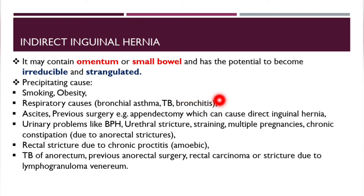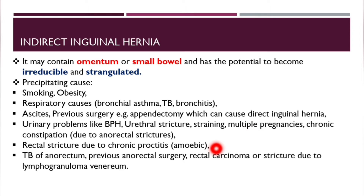The precipitating causes include smoking, obesity, and respiratory causes like bronchial asthma, TB, bronchitis, ascites, and previous surgery — for example, appendectomy, which can cause direct inguinal hernia. Urinary problems like benign prostatic hyperplasia and urethral stricture, straining, and multiple pregnancies are also precipitating causes.